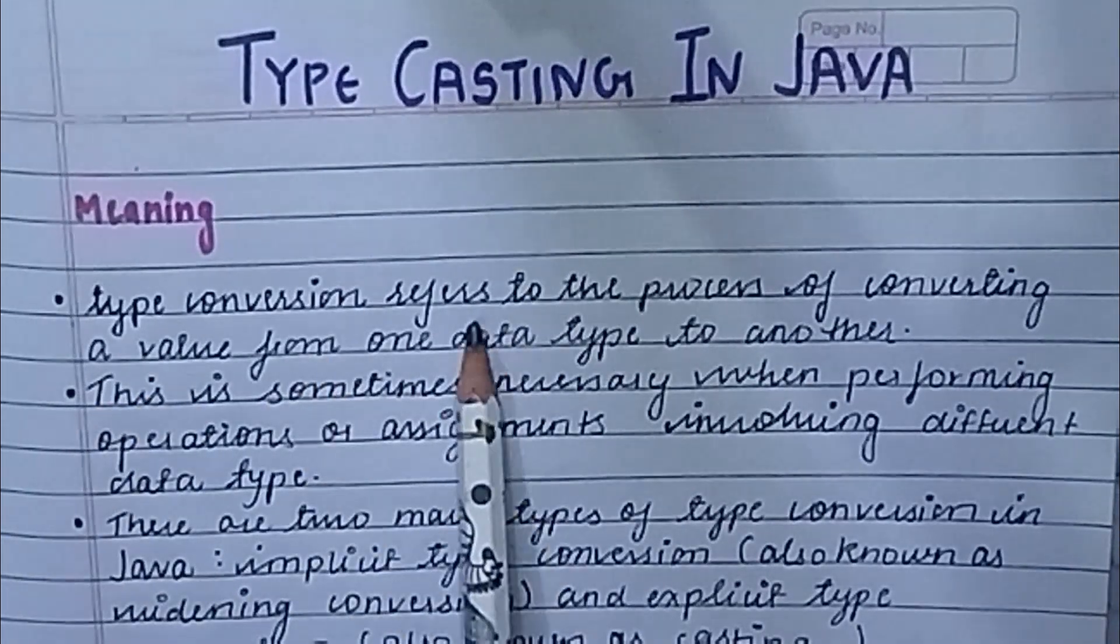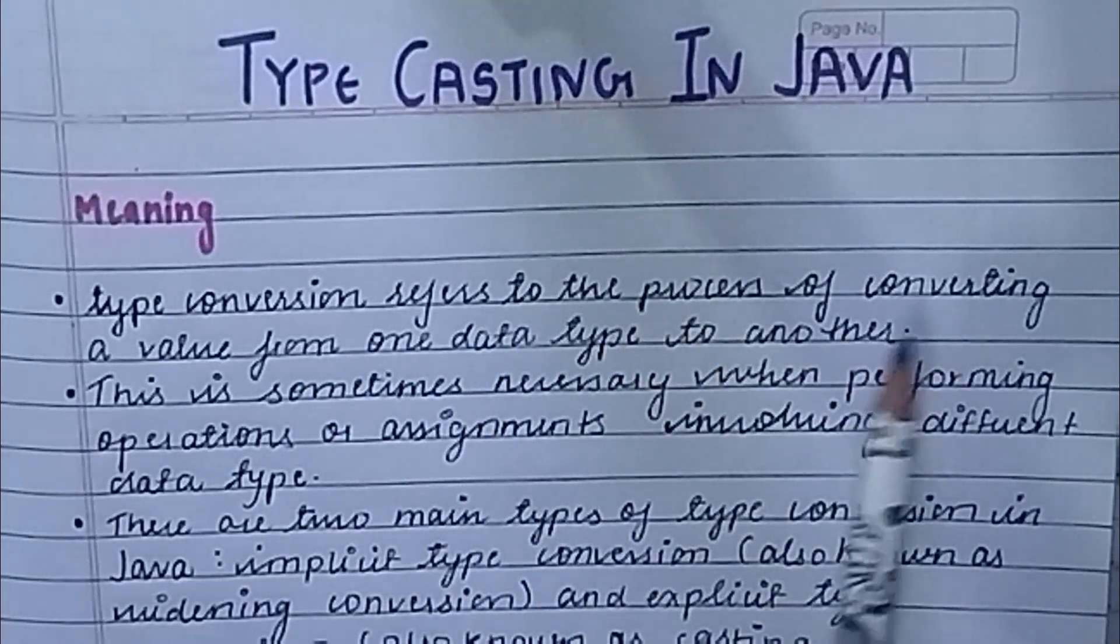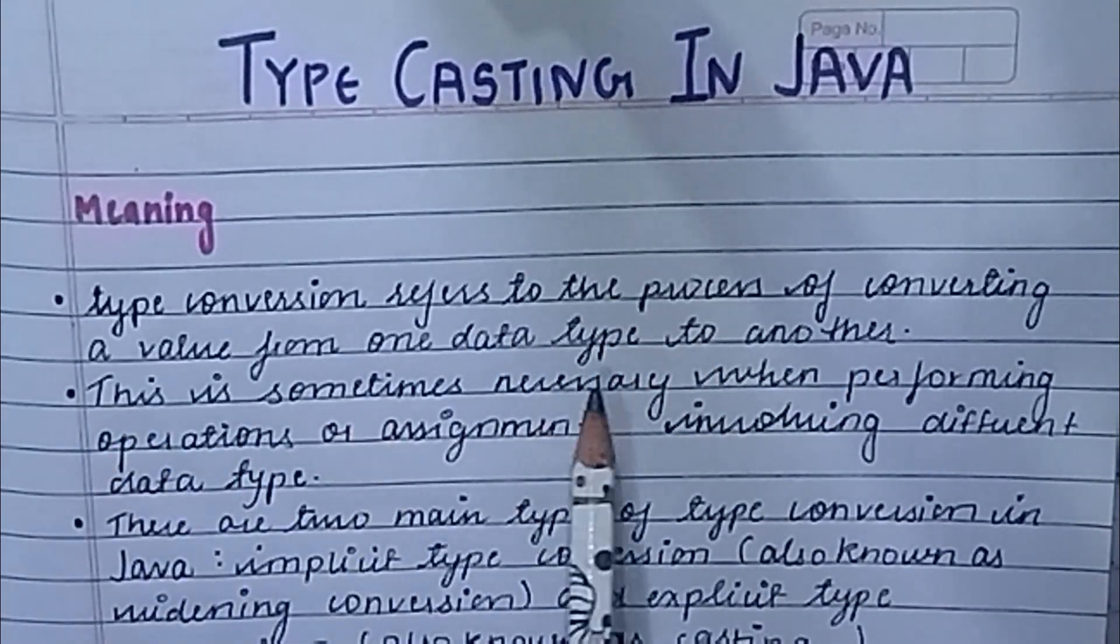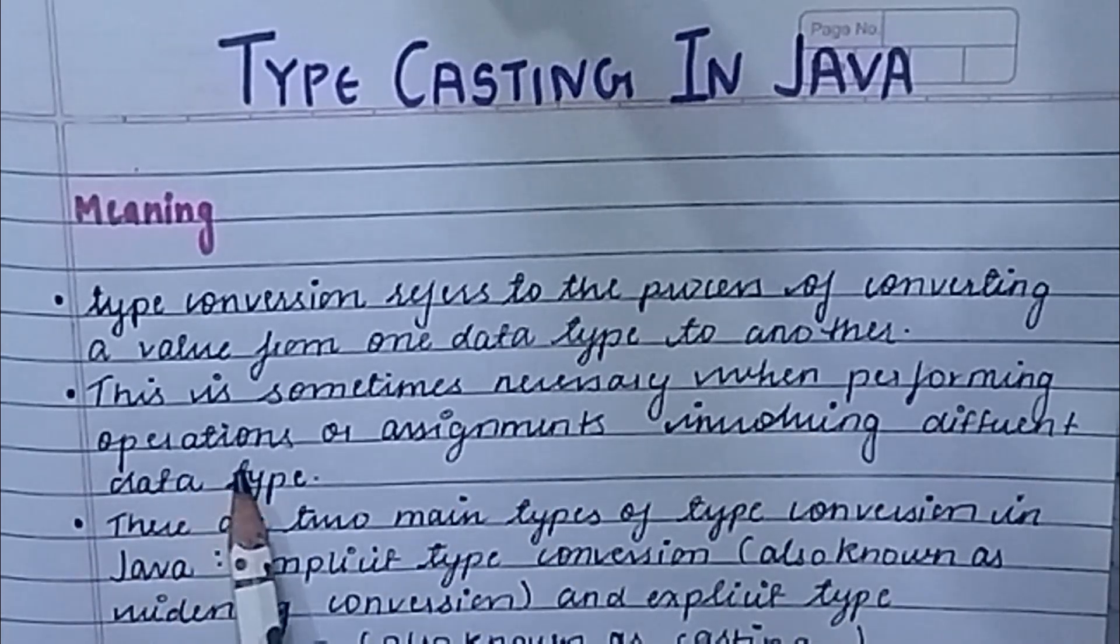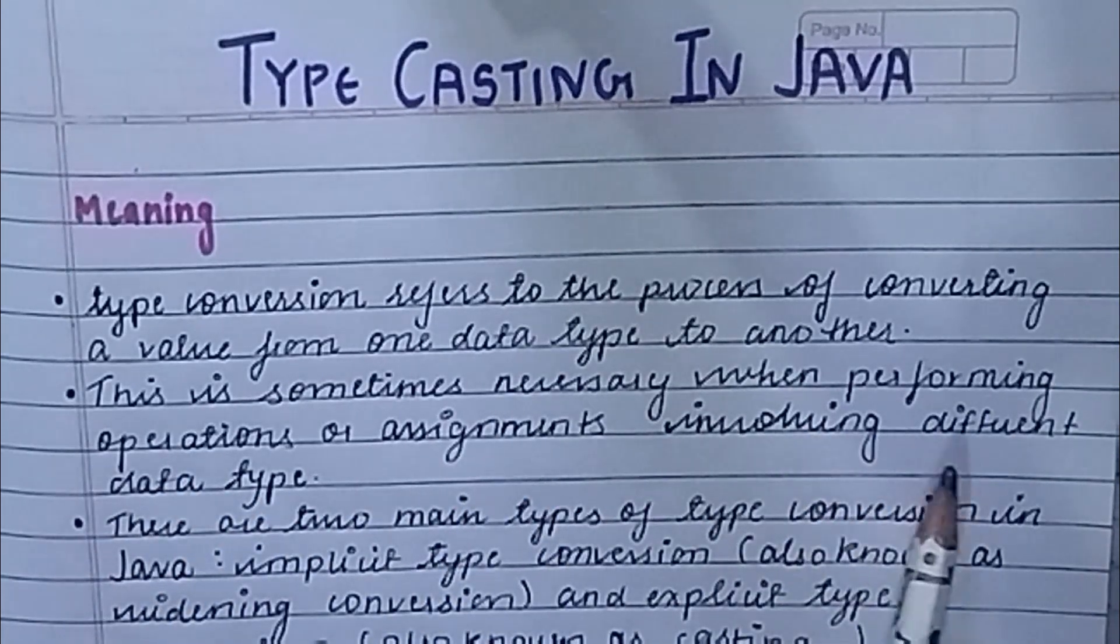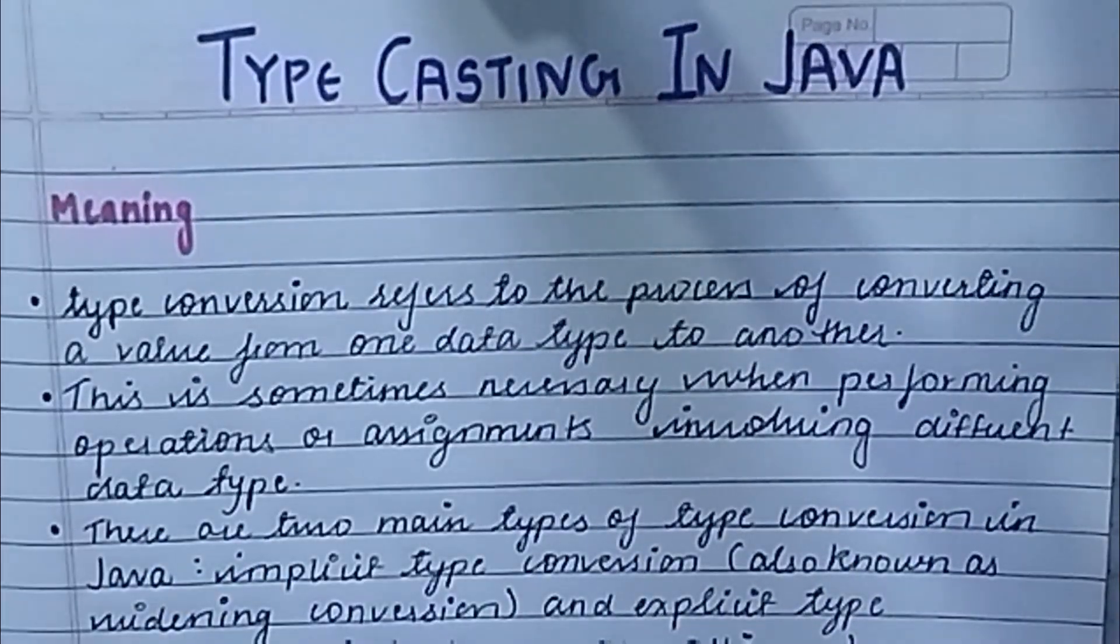Type conversion refers to the process of converting a value from one data type to another. This is sometimes necessary when performing operations or assignments involving different data types.